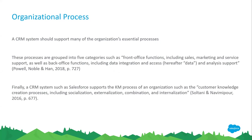That leads us into organizational process. A CRM system supports many essential processes of an organization. I found five categories: front office functions — sales, marketing, and service support — and back office functions, which include data integration and access, and then data analysis. From what we've learned in knowledge management, there is the cycle of knowledge management: creation, socialization, externalization, combination, and internalization.